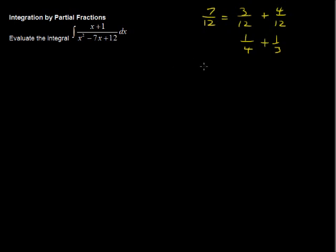So here's what we're going to do. We'll say that x plus 1 over x squared minus 7x plus 12, that integrand, equals the sum of two fractions. I'll give the first fraction a denominator of x minus 3, and the second fraction a denominator of x minus 4.